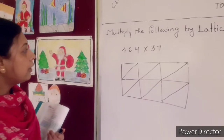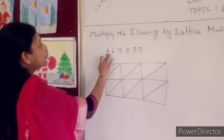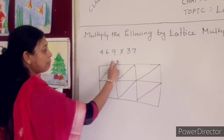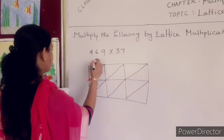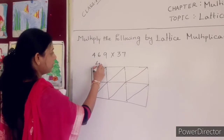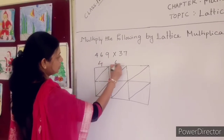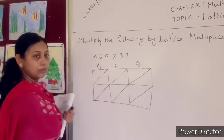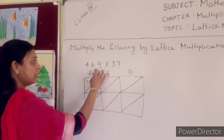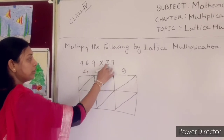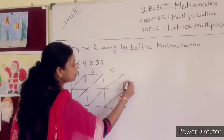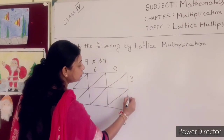First you write down 469 above each box. You have to multiply this number with 37, so you write 37 on the side.